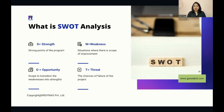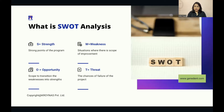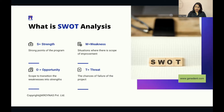SWOT analysis: S stands for Strength — the strong points of a program or project. W is for Weakness — situations which have weaknesses and scope for improvement. O is Opportunity — the scope to transition weaknesses into strengths. And T is Threat — the chance to understand the feasibility, success, or failure of the project. As a team, we know this course is foolproof and a wholesome meal for anyone who takes it.